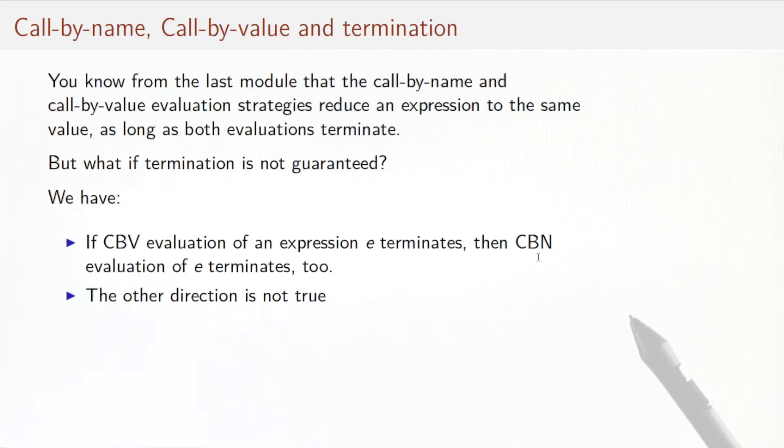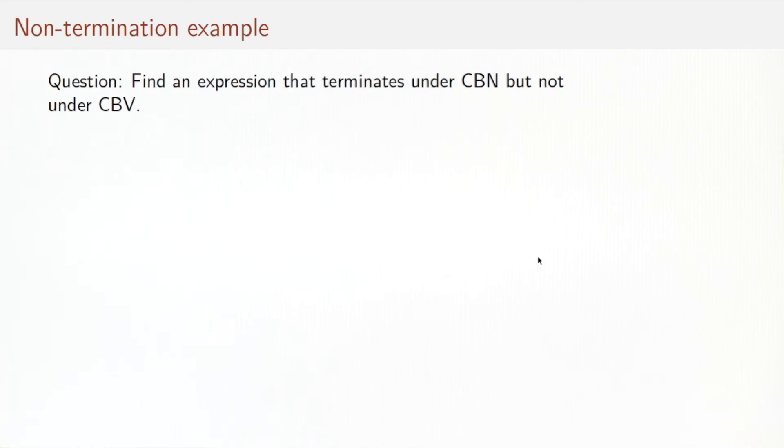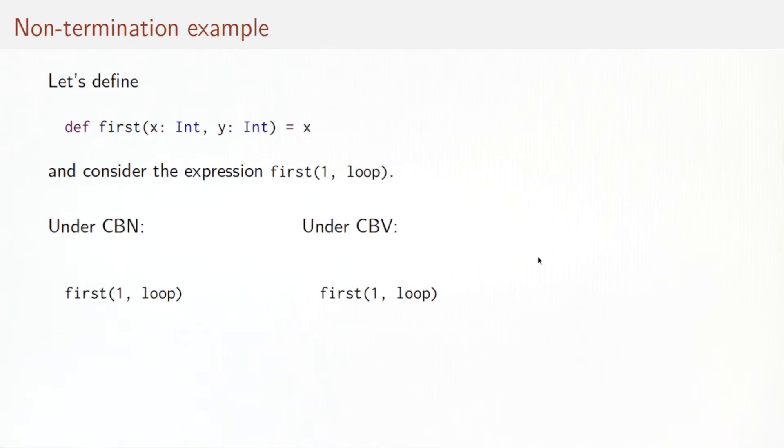So let's see an example. Can we find an expression that terminates under call-by-name but not under call-by-value? Okay, so let's see how we would go about that. We define a function first that takes two parameters, x and y, and returns the first one x, so it forgets about y. And then we consider the expression first of one and loop, so we pass a non-terminating computation into the second parameter.